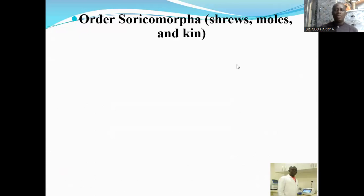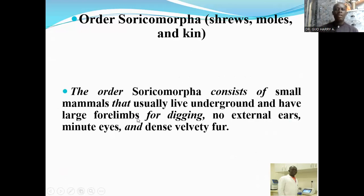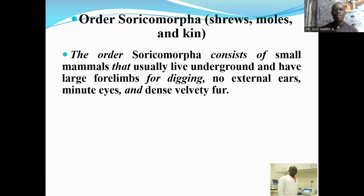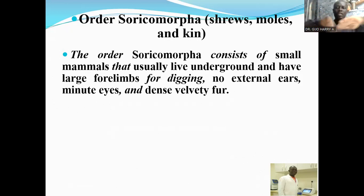The next order is the order Soricomorpha, which consists of shrews, moles, and hedgehogs. The order Soricomorpha consists of small mammals that usually live on the ground and have large forelimbs for digging, no external ears, minute eyes, and dense velvety fur. The distinctive features are their large forelimbs enabling them to dig into the soil, absence of external ear pinna, minute eyes, and very dense fur.